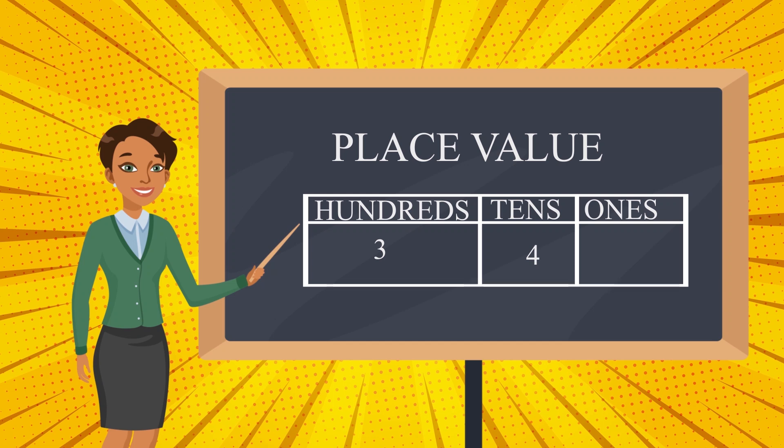But in place value, we don't write the numbers like this. Instead, we start writing from the ones place. Let's place 4 here and 3 here. Now, to find out the place value, we look where the number is sitting, in which place it's sitting. Here, we can see 4 is in 1's place and 3 is in 10's place.